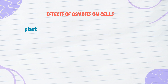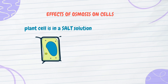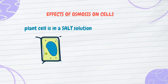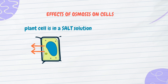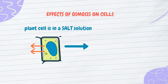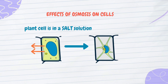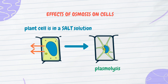What happens when a plant cell is in a salt solution? The salt solution is a hypertonic solution — it has a higher solute concentration than the cytoplasm. Therefore, when a plant cell is placed in the salt solution, water molecules move from the cell to the salt solution. The cytoplasm loses water, causing the cell membrane to pull away from the cell wall, as shown by this image. This feature is called plasmolysis.